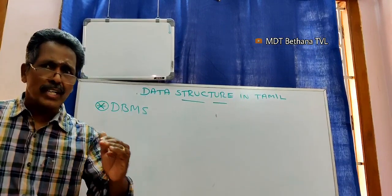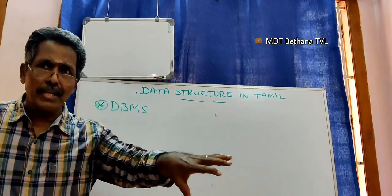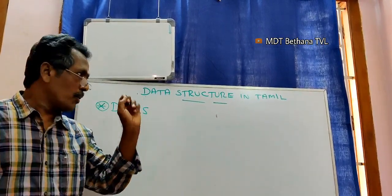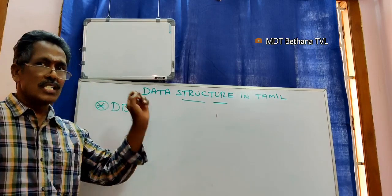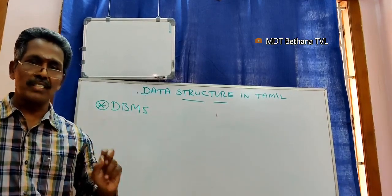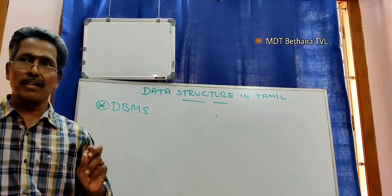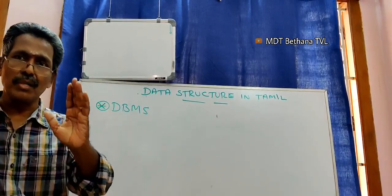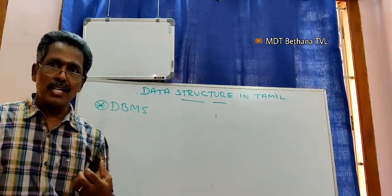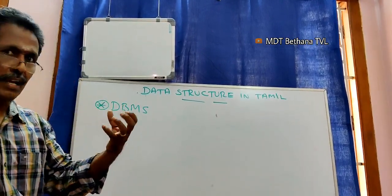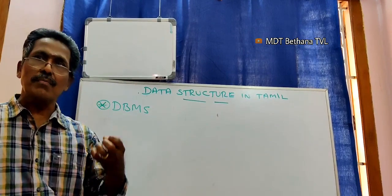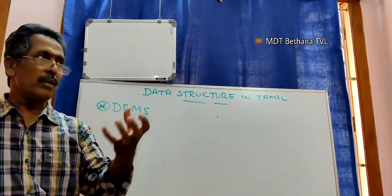A student database includes register number, name, and subject marks. An employee database includes employee name, employee ID, and basic pay.